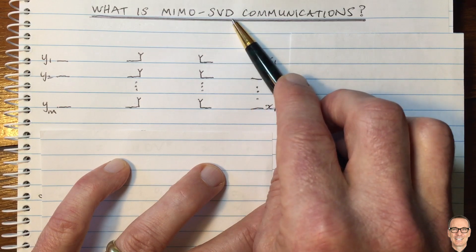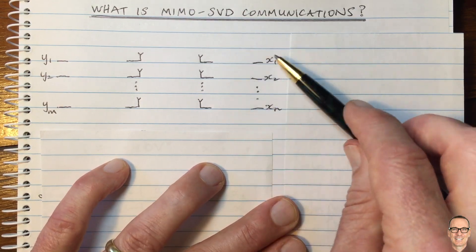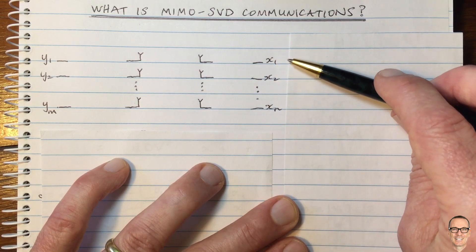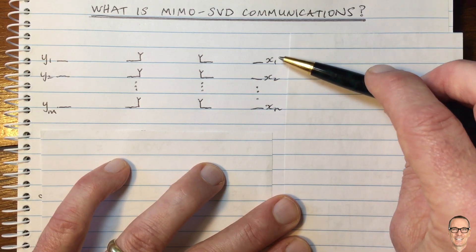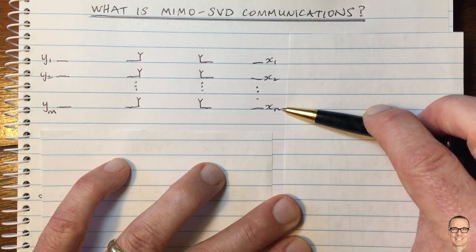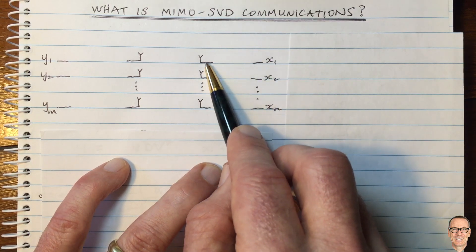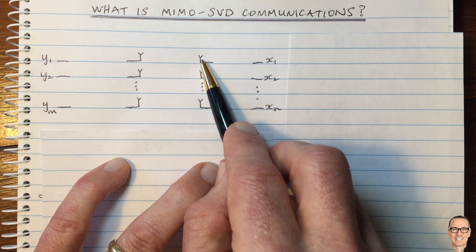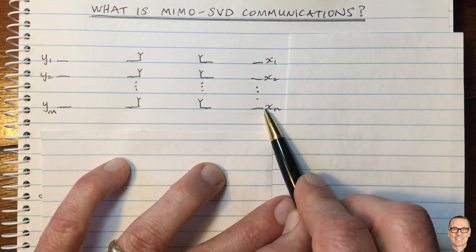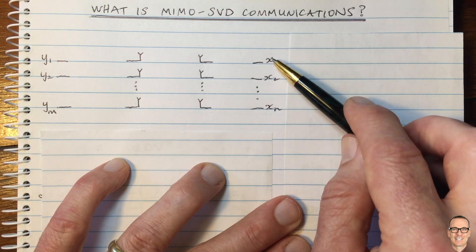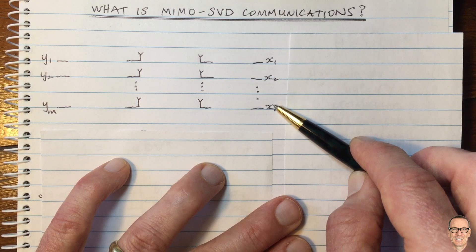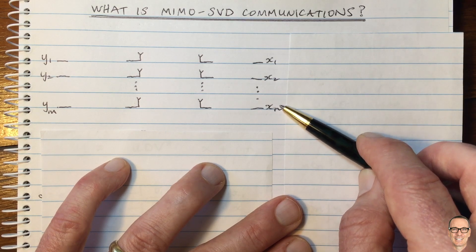We'll come to the SVD in a minute. But let's think about this transmitter. It's a single user that has divided its data stream into N sub-data streams. You could transmit that data stream off antenna 1 and this data stream off antenna 2 and so on. These Xs represent the complex numbers that are going to be sent — these are the constellation points.